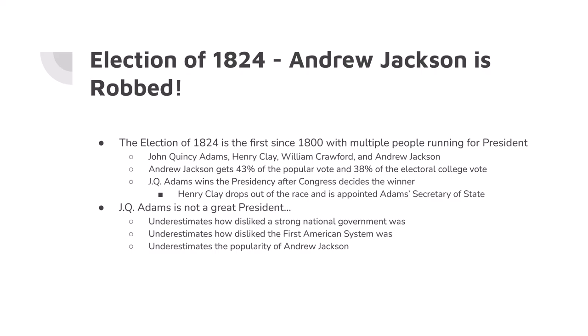In real numbers: Andrew Jackson received 99 electoral college votes, John Quincy Adams 89, William Crawford 41, and Henry Clay 37. Because nobody received enough electoral college votes, the election was decided by Congress. In the end, Henry Clay drops out of the race, Andrew Jackson does not win the presidency — John Quincy Adams does. And Henry Clay becomes the secretary of state for President Adams.